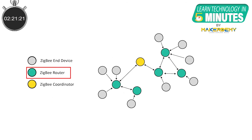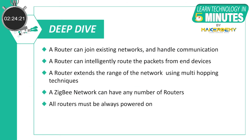Next, let's look at the second device type. A router can join existing networks, send information, receive information, and route information. A router is like a messenger that helps communicate between end devices that are too far apart, using a technique called multi-hopping. A Zigbee network can have multiple routers but, just like the coordinator, they should always be powered on.